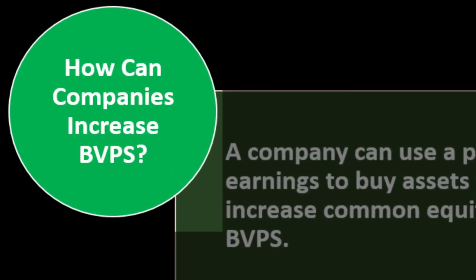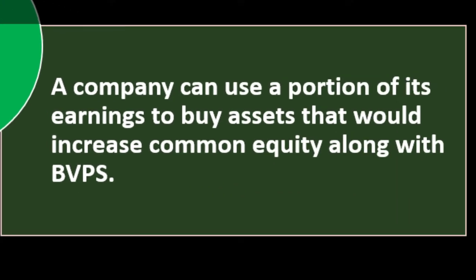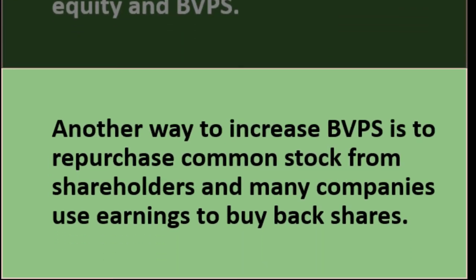How can companies increase book value per share? A company can use a portion of its earnings to buy assets, which increases common equity along with book value per share, or it can use earnings to reduce liabilities, which also results in an increase in common equity and book value per share. Another way to increase book value per share is to repurchase common stock from shareholders, decreasing the number of shares outstanding. Many companies use earnings to buy back shares.